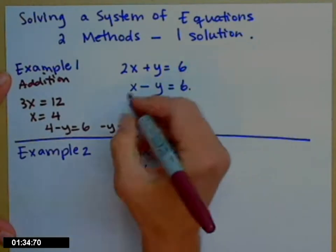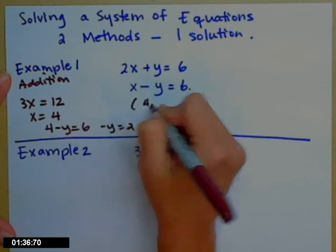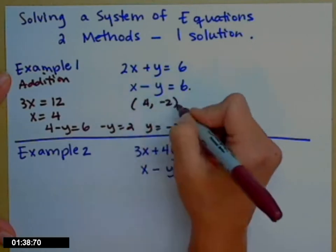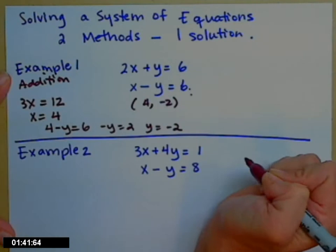So the solution to this system is the point (4, -2). This point works in both equations, makes both of them true.